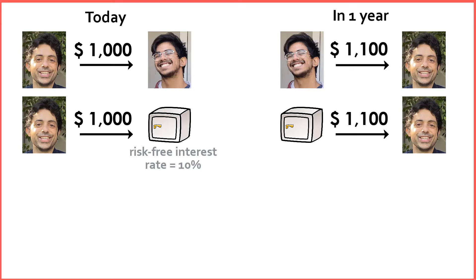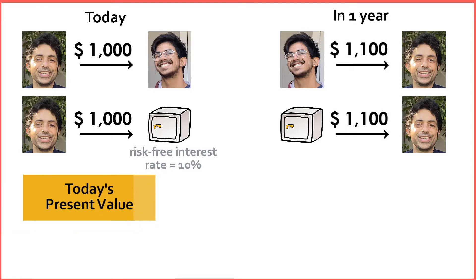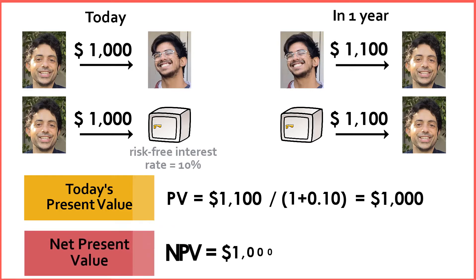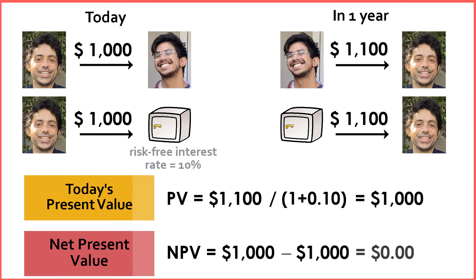When considering the net present value of the offer that Chai is making me, I take his $1,100 and divide it by the current risk-free interest rate plus one, which is 1.1, equal to $1,000. Therefore, the present value of the benefit he's offering me is $1,000. To find the net present value, we find $1,000 minus the present value of the cost, which is $1,000. Basically, the net present value of Chai's offer is $0.